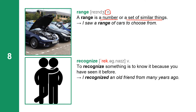Next one: recognize. Recognize has three syllables: R-E-C-O-G-N-I-Z-E, with accent on the first syllable. Recognize is a verb. To recognize something is to know it because you have seen it before. I recognized an old friend from many years ago.